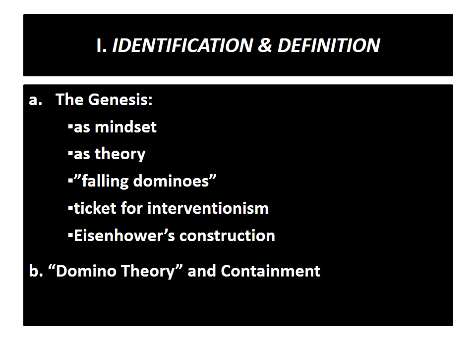President Eisenhower was the first to convert that mindset into words and to use the term domino. This happened in April 1954 in the context of what was seen by Washington as a mounting communist threat from North Vietnam to its neighbors. Quoting Eisenhower: "You have broader considerations that might follow what you would call the fallen domino principle. You have a row of dominoes set up. You knock over the first one, and what will happen to the last one is the certainty that it will go over very quickly. So you could have a beginning of a disintegration that would have the most profound influences."